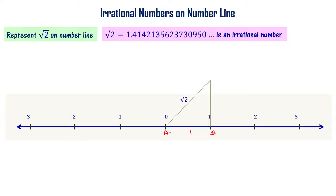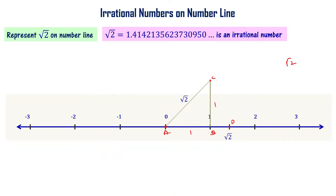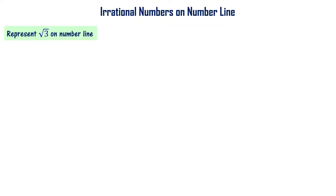Since AB = 1 unit and BC = 1 unit, AC = √2 units. Now, taking A as the center and AC as the radius, I draw an arc with a compass. The arc cuts the number line at point D. The length AD = AC = √2 (as it is the radius of the circle). So point D on the number line represents √2. This is how we represent the irrational number √2 using geometric concepts and the Pythagorean theorem.